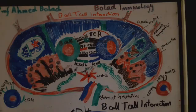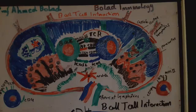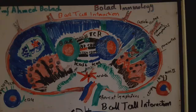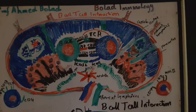Somatic hypermutation is hypermutation at the level of the somatic cell, and it aims at achieving higher affinity of the immunoglobulins. This results in maximum fitness of immunoglobulins, so B-cells can fit well to the antigen, ultimately forming antibodies with high affinities for antigens.